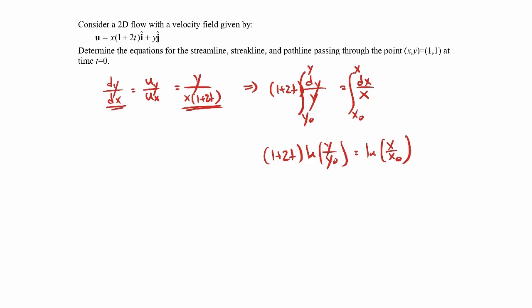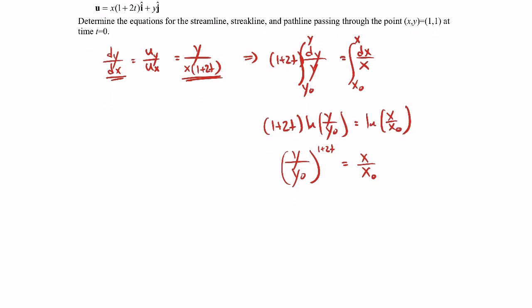The left-hand side becomes (1 plus 2t) times natural log of y over y-naught, and the right-hand side is natural log of x over x-naught. Taking the exponential of both sides, we get y over y-naught raised to the (1 plus 2t) power equals x over x-naught. That's our general streamline equation. We're asked to find it through the point (1,1) at t equals zero, so substituting x-naught equals 1, y-naught equals 1, and t equals 0 gives us simply y equals x.